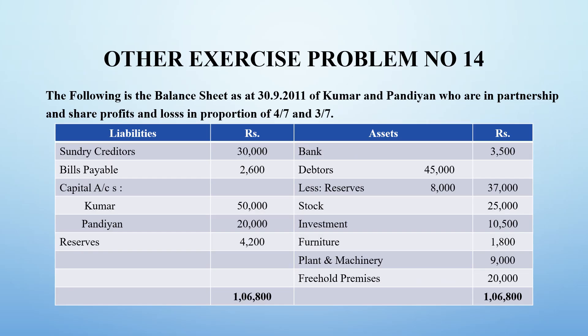Kumar and Pandian were partners. The total balance sheet value — that is, total assets and liabilities — was ₹1,68,00, and they were sharing profit and loss in the proportion of 4:3.